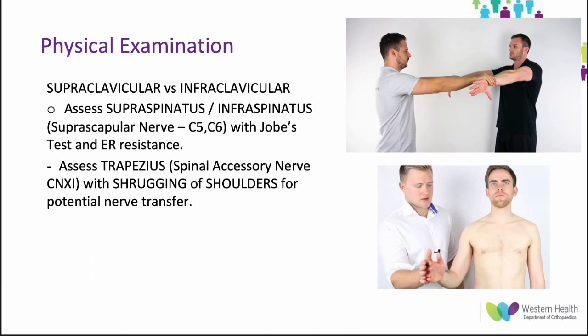To differentiate supraclavicular versus infraclavicular injury, you must check supraspinatus and infraspinatus muscle function. You can perform the Jobe's test for supraspinatus and check external rotation resistance for infraspinatus. At this point you can also assess trapezius — supplied by the spinal accessory nerve — by asking the patient to shrug their shoulders. This is done to check for potential nerve transfer of the spinal accessory nerve in later management.